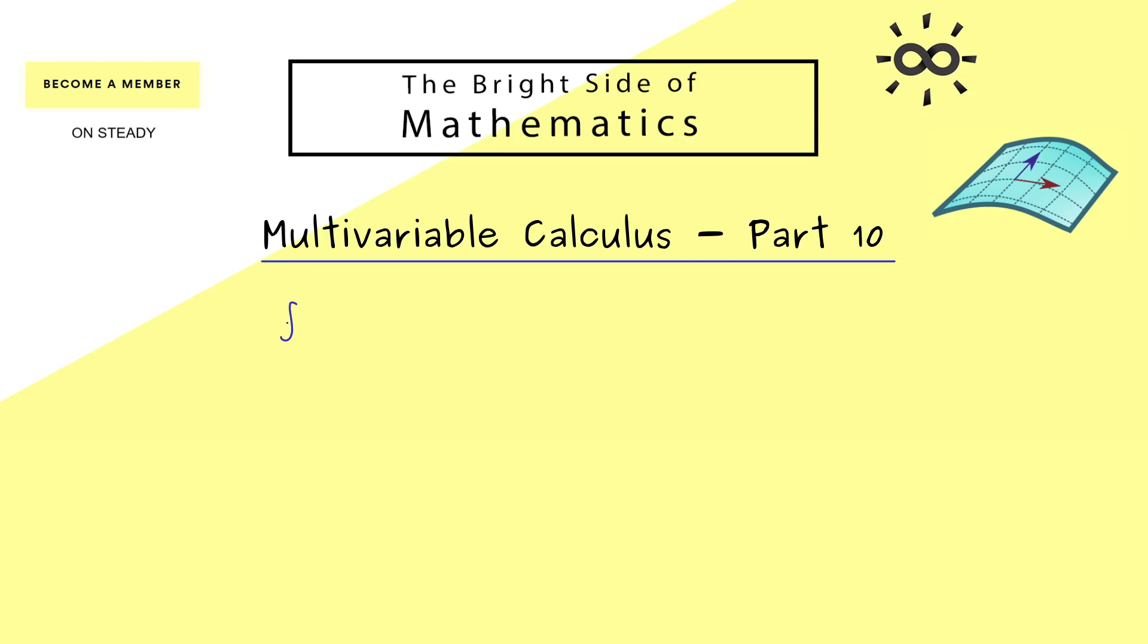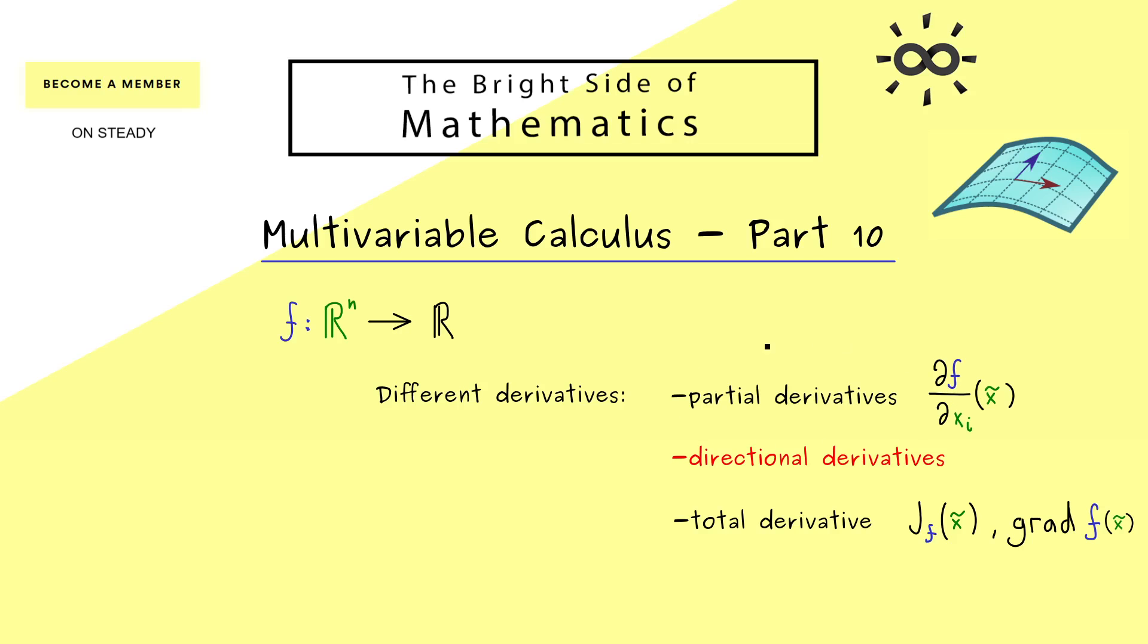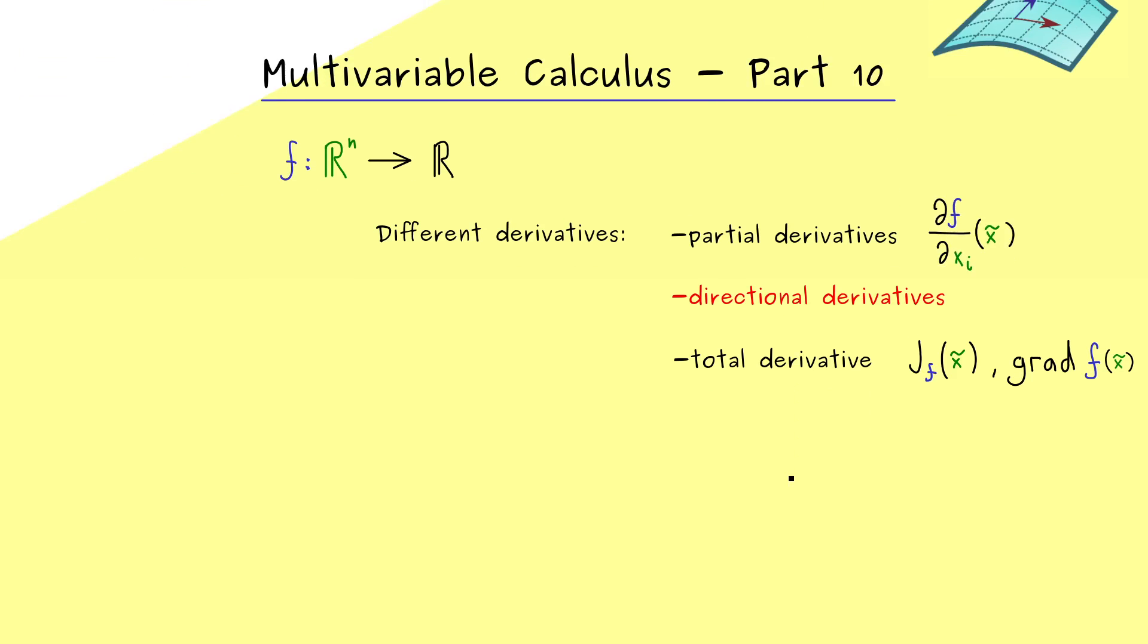Now in this video, as often, we will look at a function f from R^n into R. In other words, the function depends on n variables. You know from former videos that for such a function we have different possible derivatives if they exist. The first thing we defined in part 4 were the partial derivatives, denoted by ∂f/∂x_i. Then in part 5 we defined the more powerful derivative, the total derivative, which can be represented by the Jacobian matrix or by the gradient. The directional derivative lies in between these two notions. Indeed, in the end you should see that the partial derivatives are just special cases for directional derivatives.